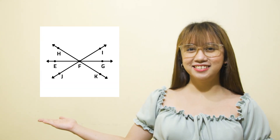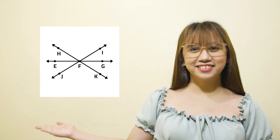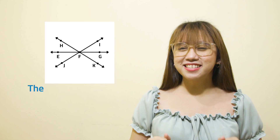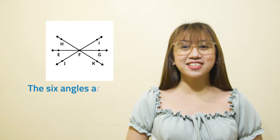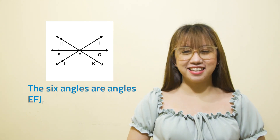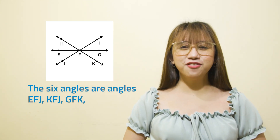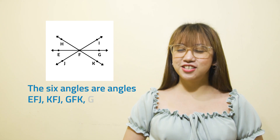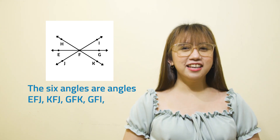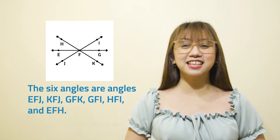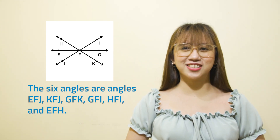Can you name at least six angles here? The six angles are angles EFJ, KFJ, GFK, GFI, HFI, and EFH.